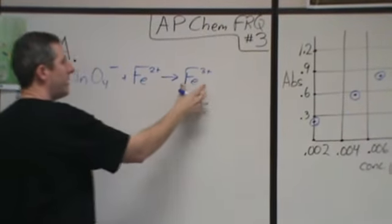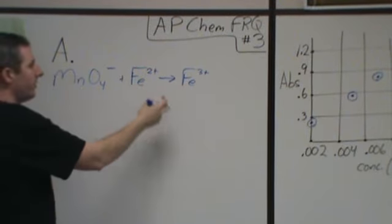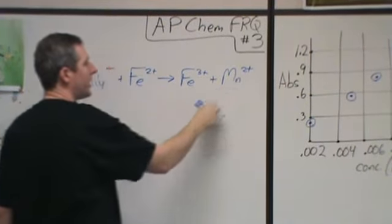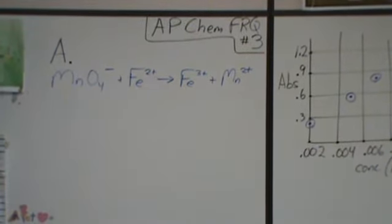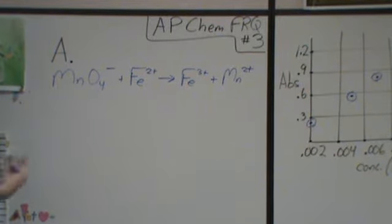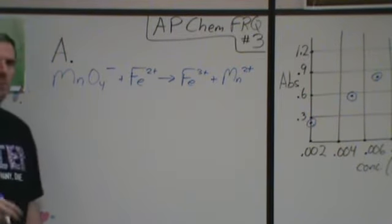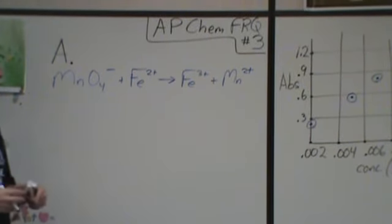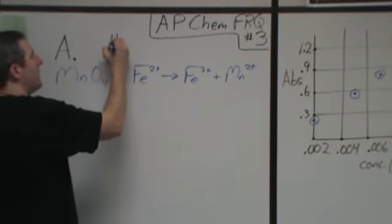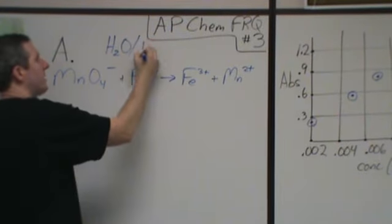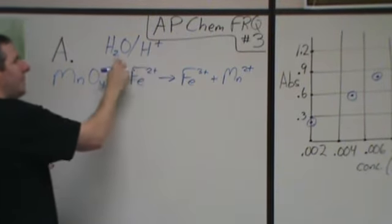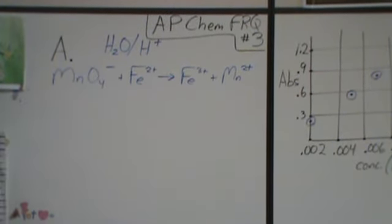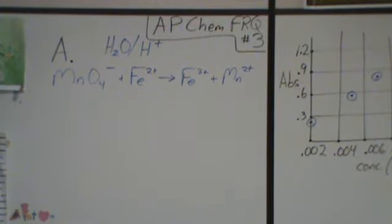Permanganate under acidic conditions always turns into Mn2+. That's just something you need to know. Iron 2+ can either become iron 3+ or iron metal. Now because the permanganate is getting reduced, this needs to be oxidized. So this is going to become iron 3+ in this case. Both of those products are things that you would just have to know. That means you have water available because you're in solution. That means you have H+ available because it's acidic.